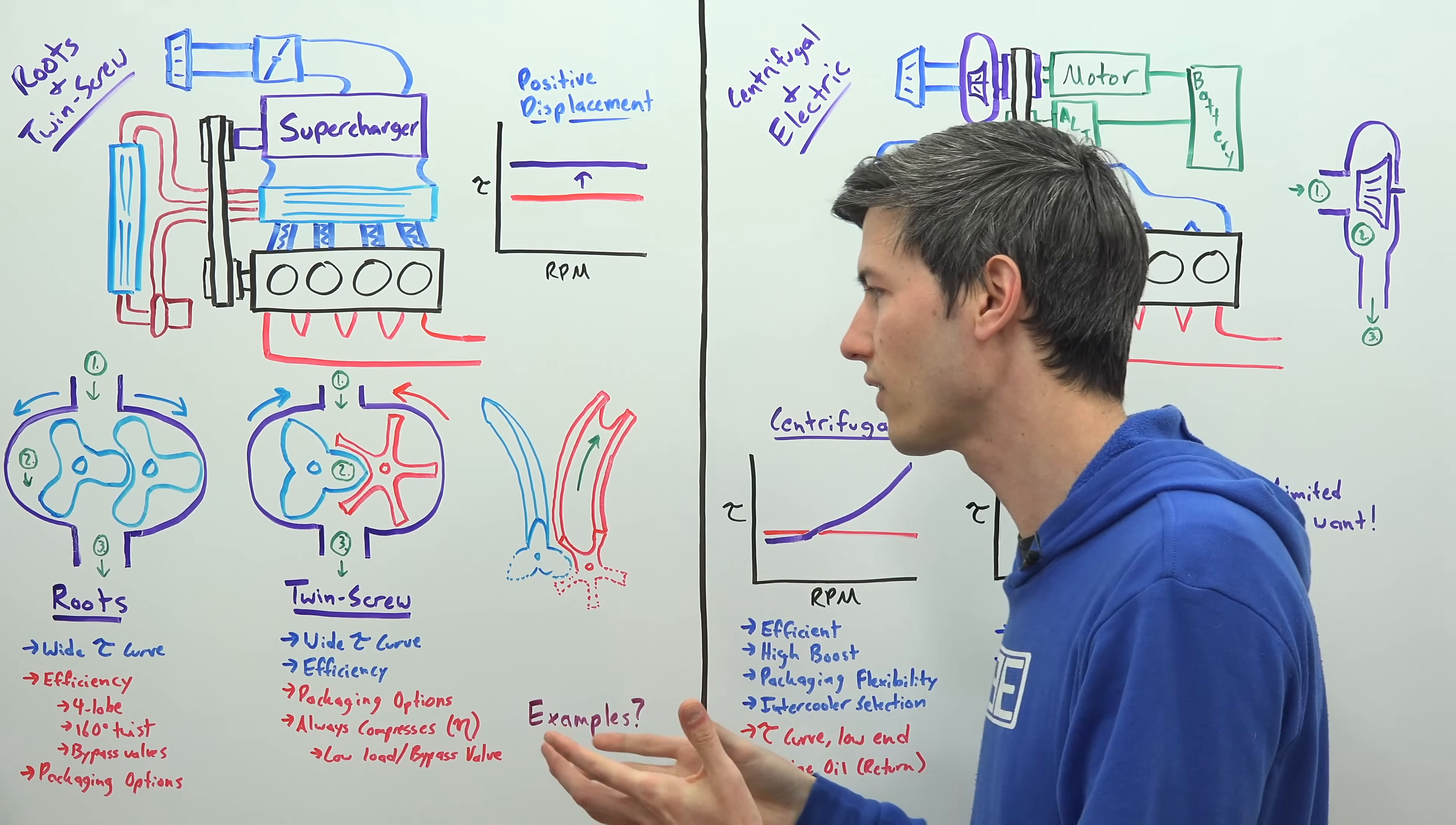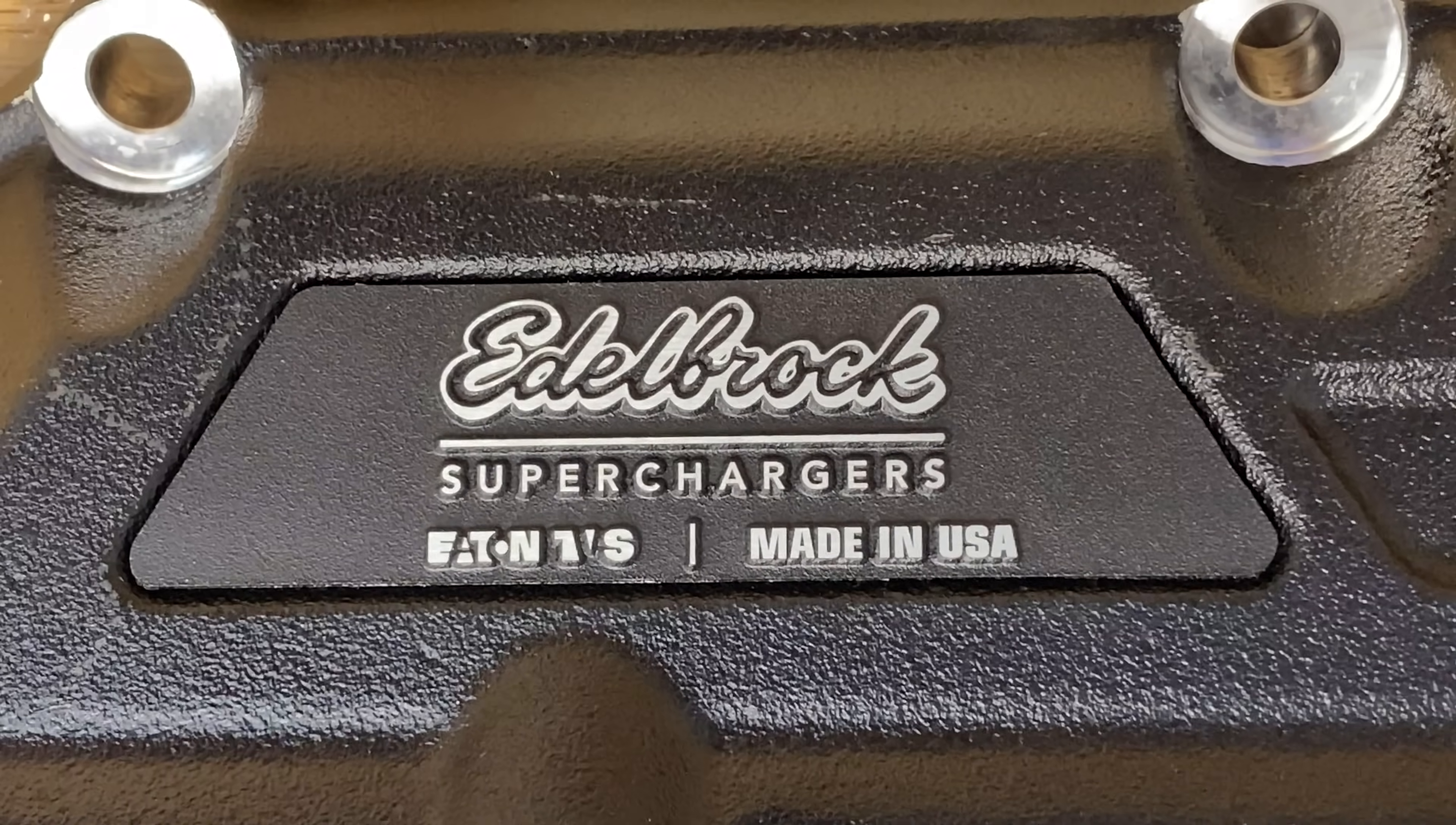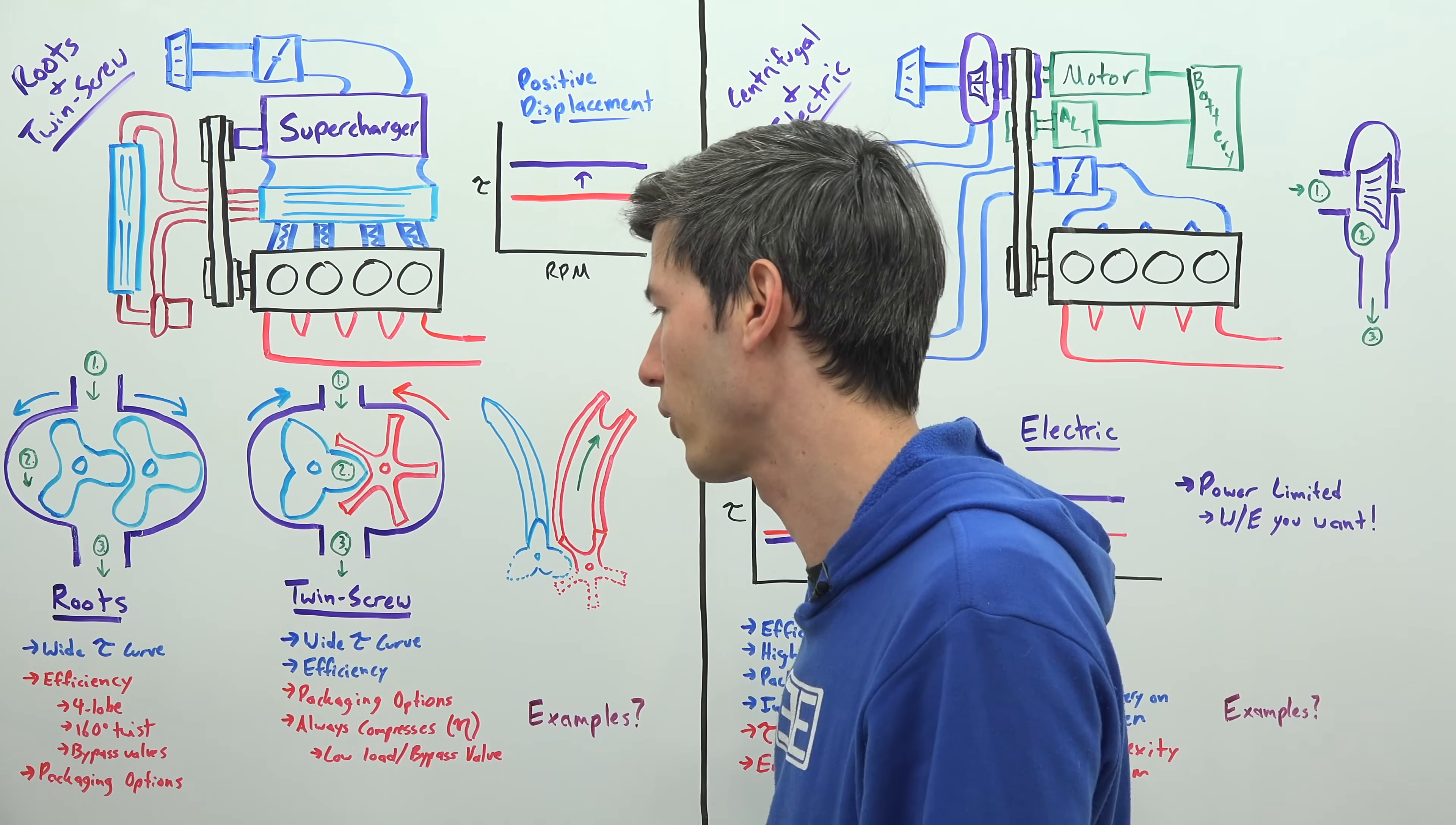So some of the advantages and disadvantages of each - both of these offering you that wide torque curve which is great. The twin screws do tend to be a bit more efficient. However, there's been a lot of modern advances with Roots style superchargers like those four lobe designs, the 160 degree twist, bypass valves. And so they're actually advancing and they're able to get thermal efficiencies above 70% with these Roots style superchargers.